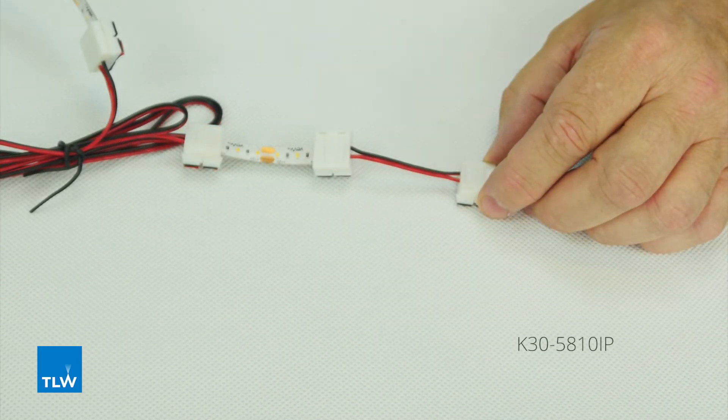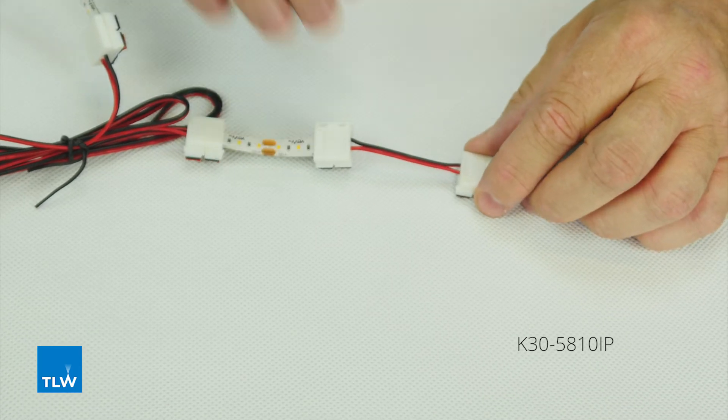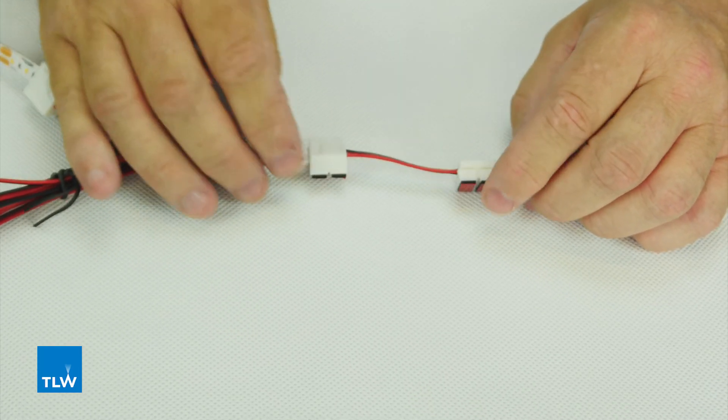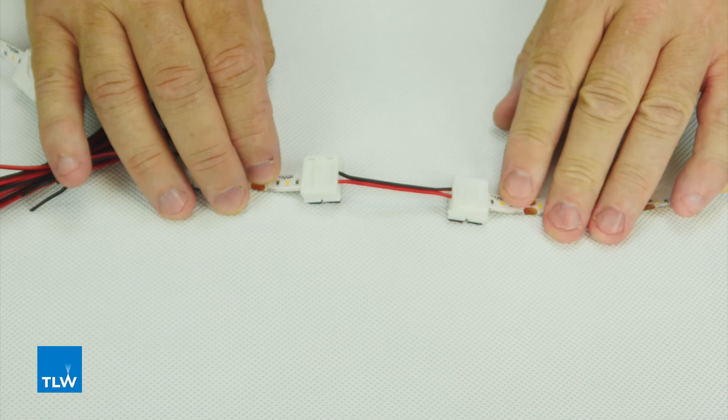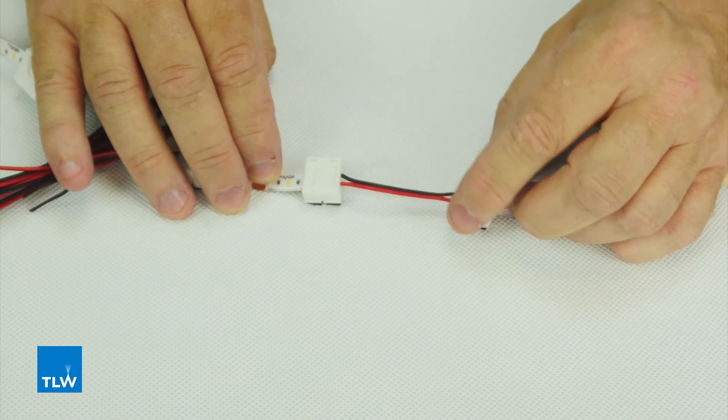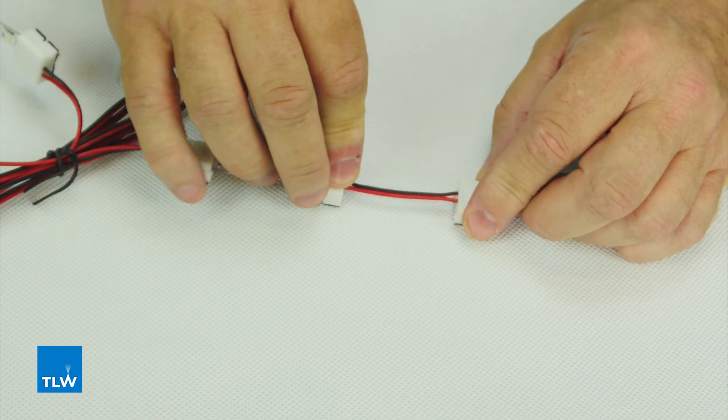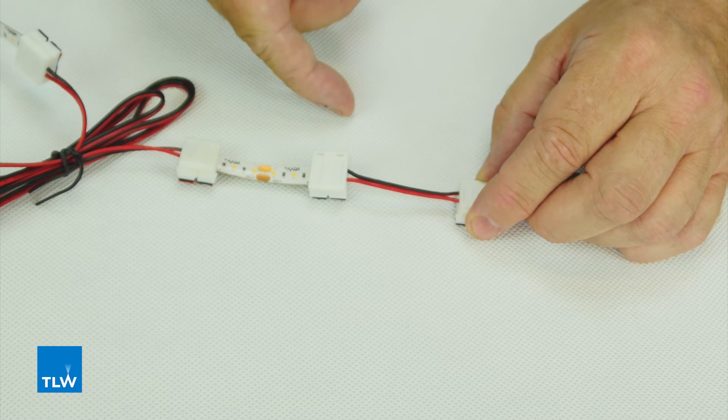This is a K30-5810 IP rated, a 50mm corner connector. You do exactly the same as with the driver connection lead: cut it, push it in, push it down, and that will allow you to take them around at angles.